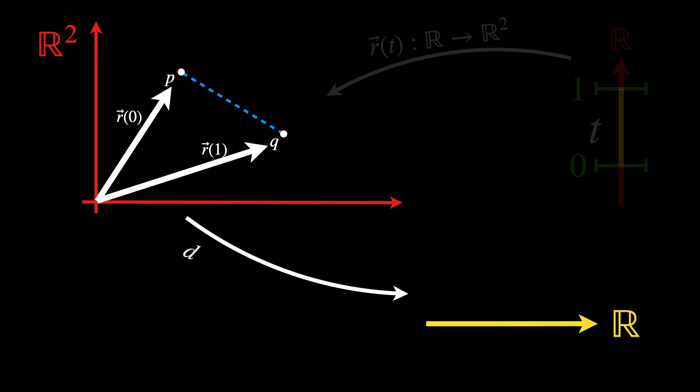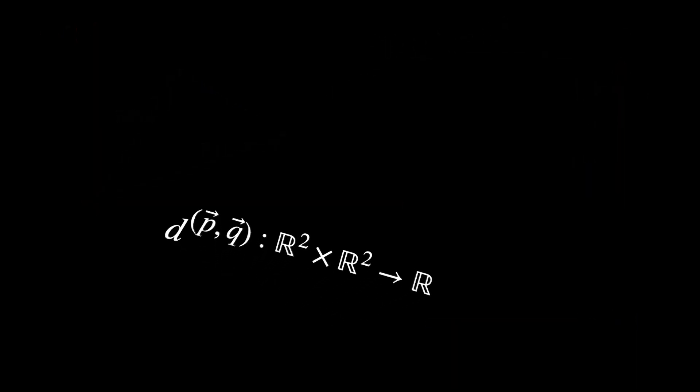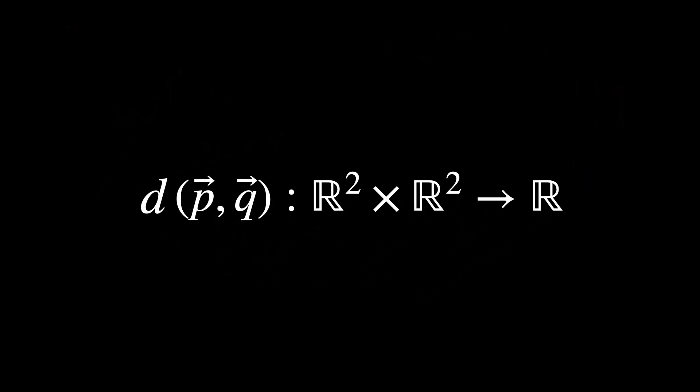Done through the map in D, or in full, d(vector P, vector Q), that goes from R² × R² to the real line. We have R² times R² because we have a total of two vectors, composed of two coordinates each.